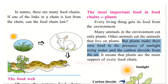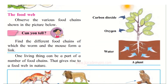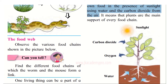Plants make their own food in the presence of sunlight, using water and carbon dioxide from the air. To cook food we require energy — in the same way, plants require sunlight to make their food. They also take water from the soil, and along with water, nutrients from the soil go into the plants.